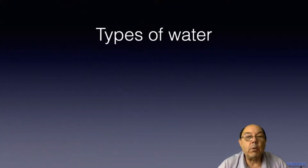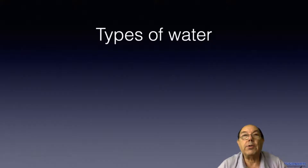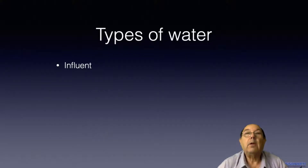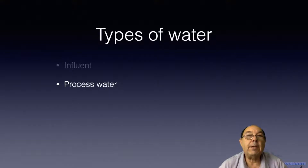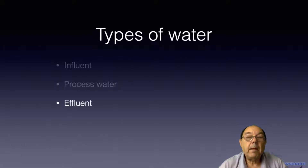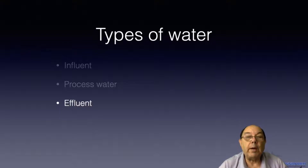Just before we start, it's worth mentioning the three different types of water that we find in the mill. There's influent, which is the water that comes into the mill from outside sources. There's process water — that's the water that's carrying the fibre and is actively in use within the process. And there's effluent, and that's the water that we have no use for anymore and we're discharging legally.